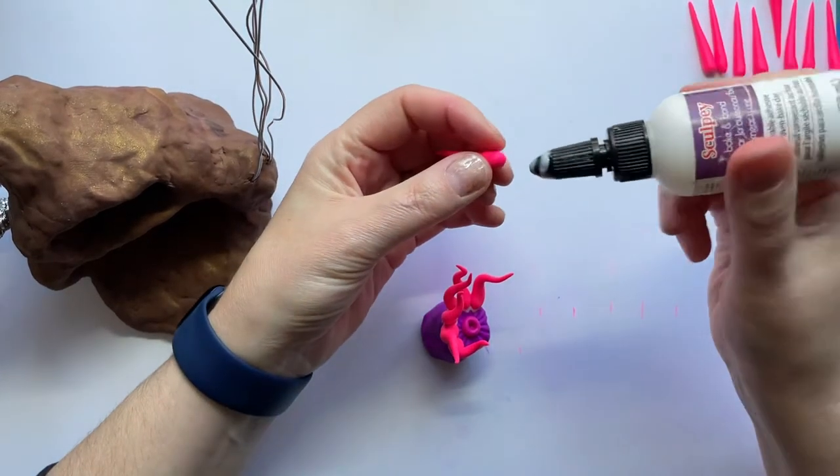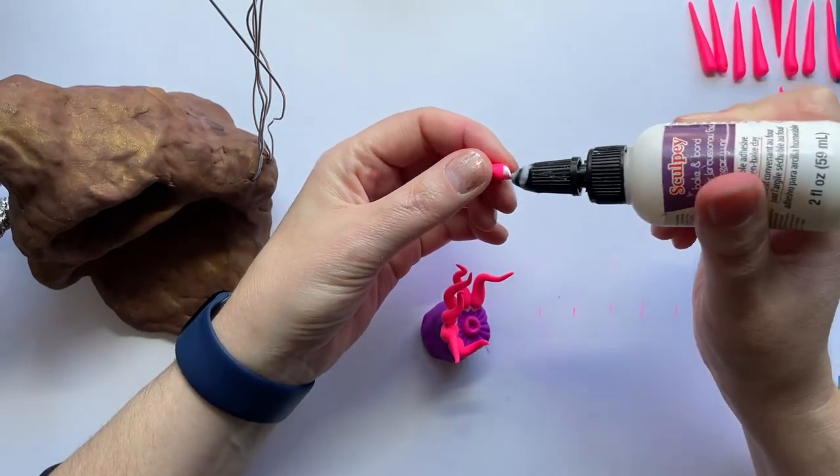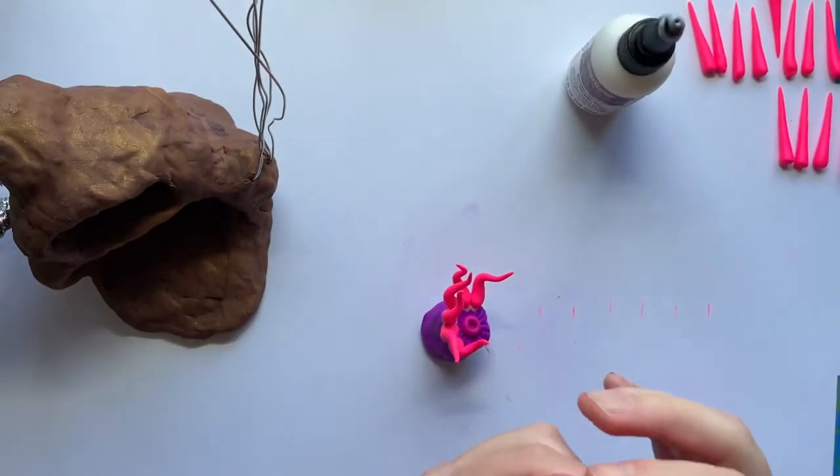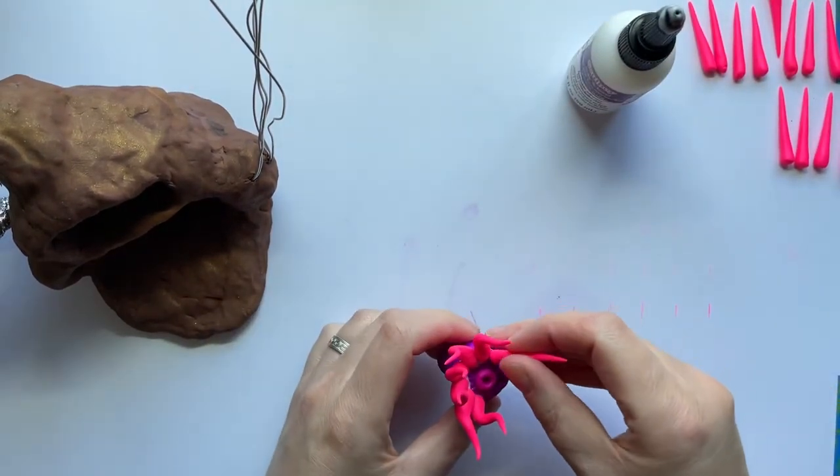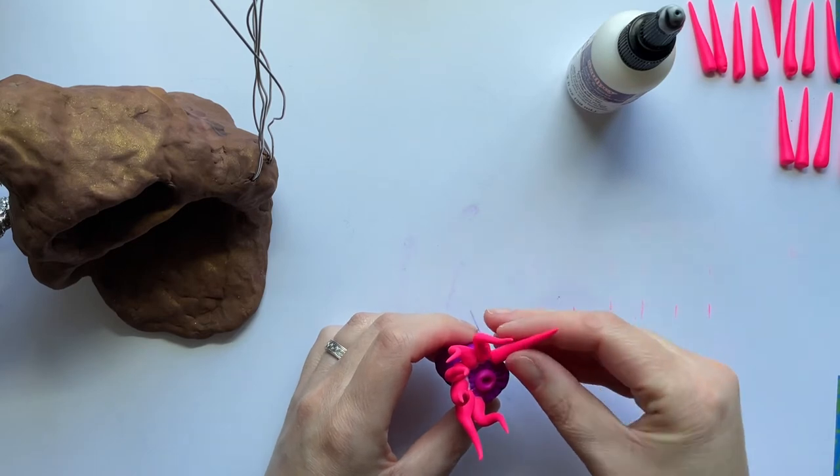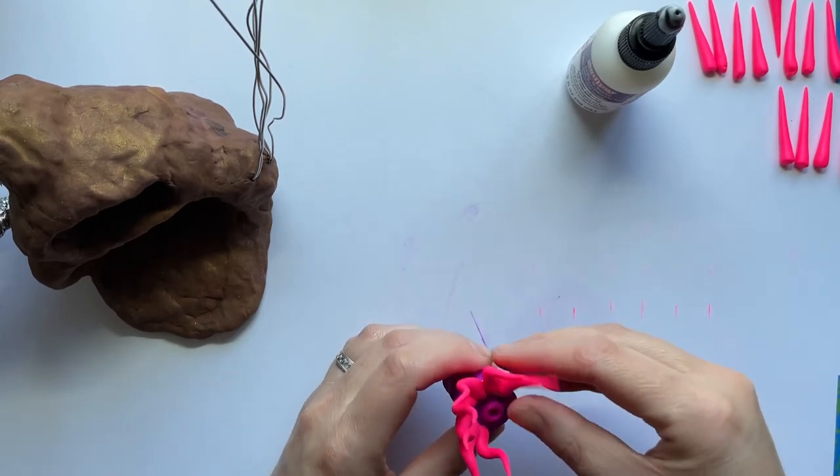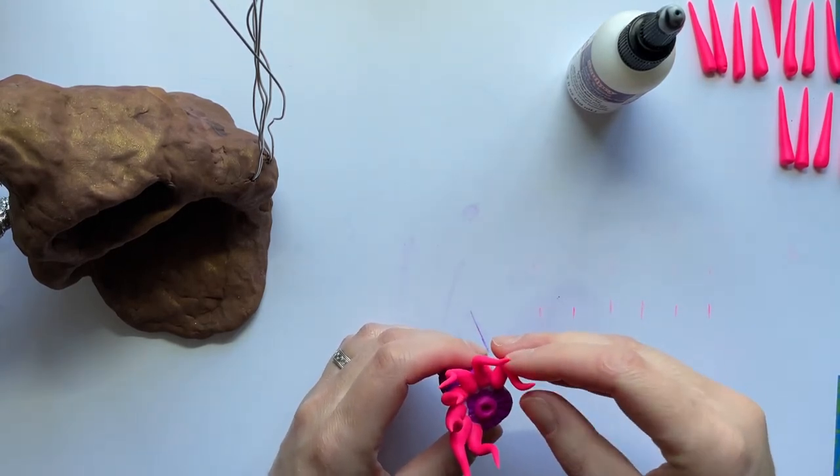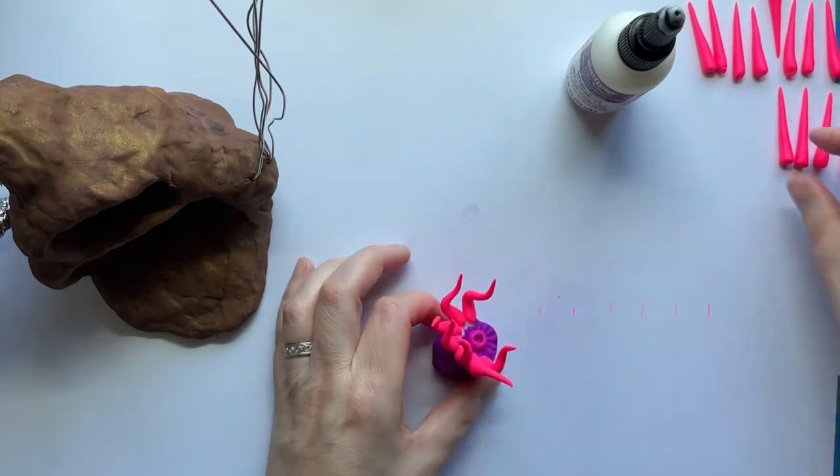Now when you go to add this on to your actual coral base, you are gonna need to make sure you glue it on with this oven baked glue. If you just set it on there and try to bake it, it's probably not gonna stick.